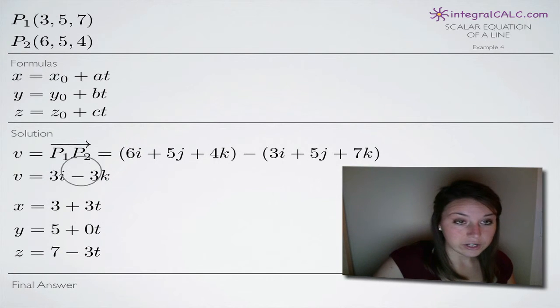Then for z, as you can imagine, we plug in our point 7 for z₀, and we plug in -3 for c because -3 is the coefficient on k. So we end up with 7 - 3t.